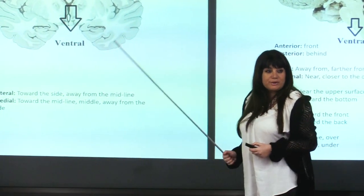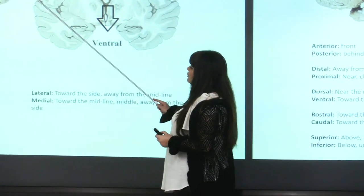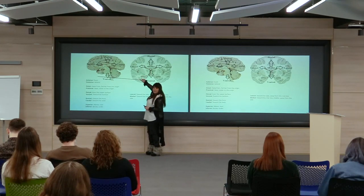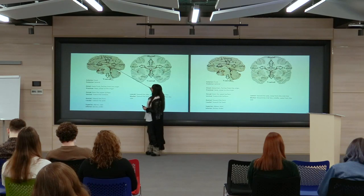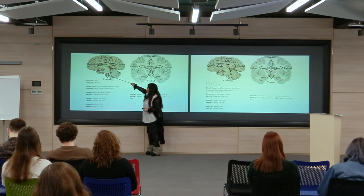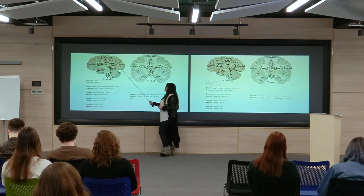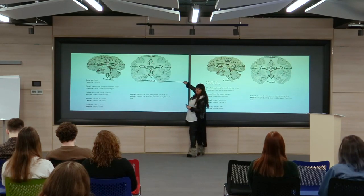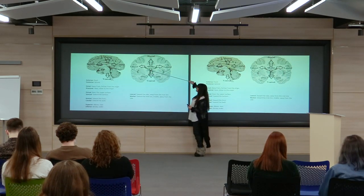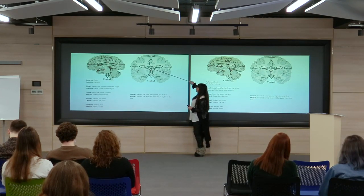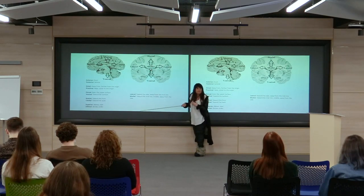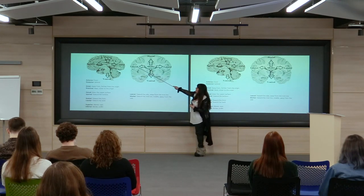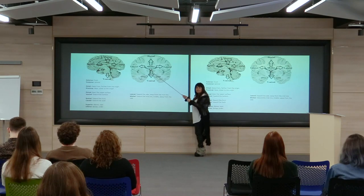Some important directional terms to review: in a mid-sagittal section, the ventral side is below, the dorsal side is above, the frontal or anterior side is in front, and the posterior or caudal side is behind — sometimes called rostral toward the front. In a frontal or coronal section, the midline direction is called medial. Moving from the midline outward is lateral direction; moving from outside back toward the midline is medial direction.